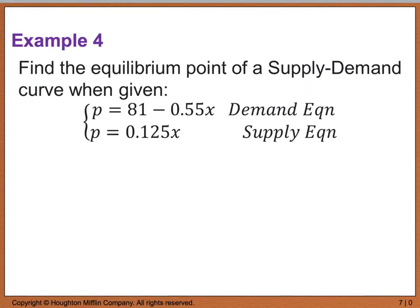Our last example from 7.2 says: find the equilibrium point of a supply and demand curve when we're given that our demand equation is P equals 81 minus 0.55x, and our supply equation is P equals 0.125x. In this case, we could use elimination. However, it's going to be just as easy to use substitution because both equations are set up so that P is equal to the equation itself.